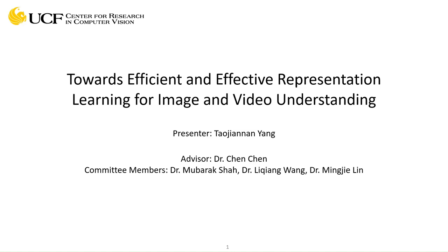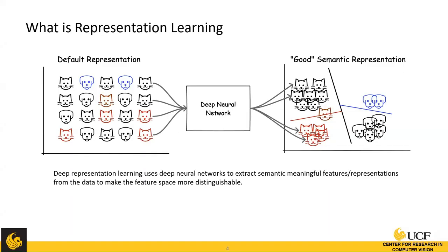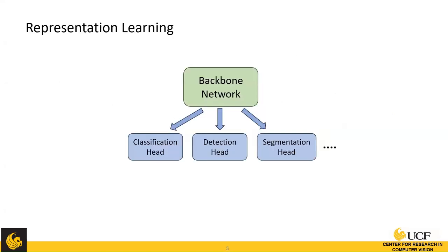My dissertation is about towards efficient and effective representation learning for image and video understanding. Deep representation learning uses deep neural networks to learn semantically meaningful features from raw data, producing a more distinguishable feature space. In computer vision, the common learning paradigm is to first train a backbone network on large-scale data to learn good representations, then append different task heads to achieve different downstream tasks.